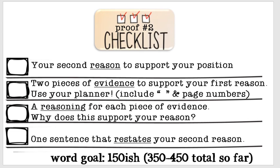Our second proof paragraph is very similar to the one you just wrote for proof paragraph number one — you are just explaining your second reason. Here is a checklist for proof paragraph number two. Remember, you are answering the question: should Cal return to Chilagi Industrial School? Make sure your proof paragraph number two has the following things.